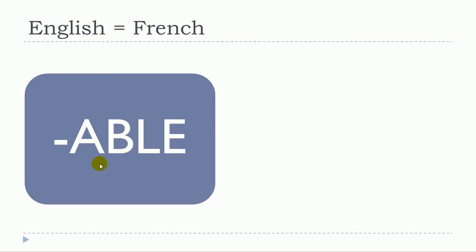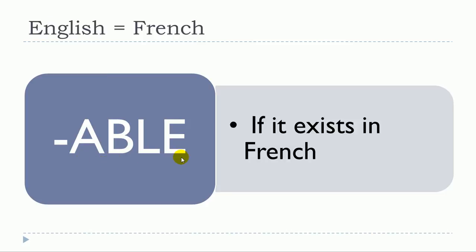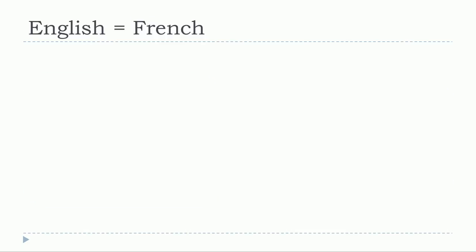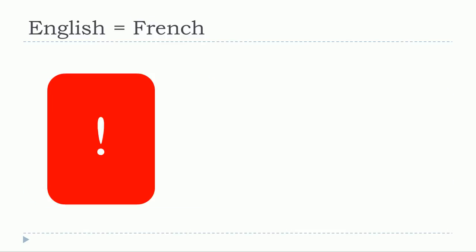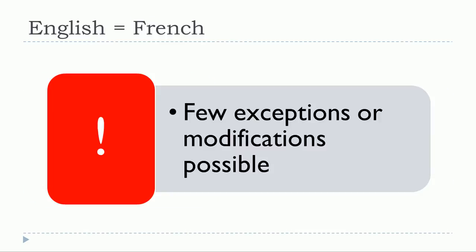If we're talking about the words ending with A, B, L, E, you've got to remember that first it must exist in French. If it exists in French then the meaning will be the same. The second thing you should think about is that in some cases we will have when it comes to the writing of the word few exceptions or modifications possible. So let's start now.